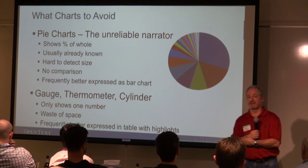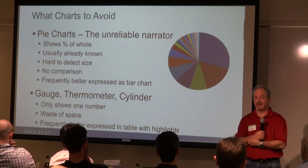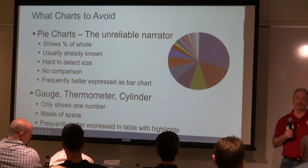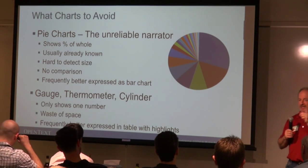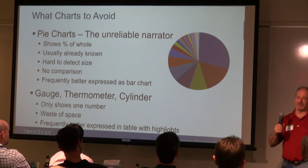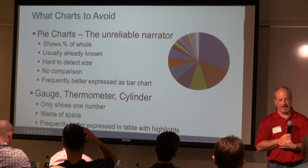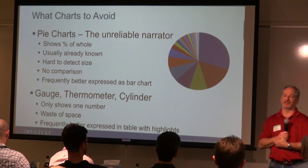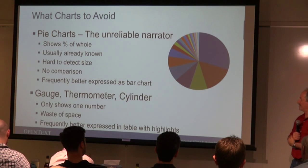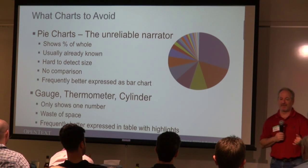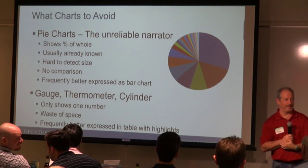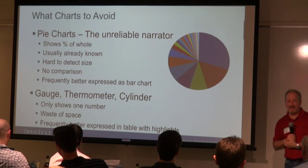Gauges, thermometers, and cylinders — they're pretty, but absolutely useless. All a gauge will tell you is one number. Sometimes they'll tell you how close you are to your goal, but you could do that in a bullet chart. The problem with gauges is they use a lot of real estate. Thermometers and cylinders are completely useless. Give me a little bullet chart — I could do that much easier. Sometimes just having the number, a color, and a trend is enough.